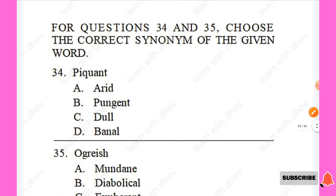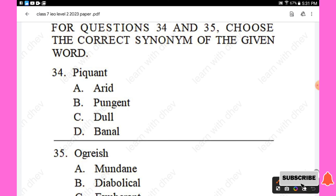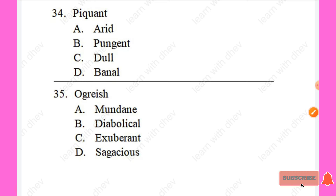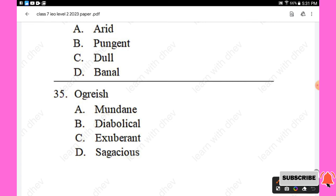For questions 34 and 35, choose the correct synonym of the given word. Question 34: The synonym of 'peccant' — options are arid, pungent, dull, bane. The right answer is 'pungent,' Option B. Question 35: The synonym of 'ogres' — options are mundane, diabolical, exuberant, sagacious. The right answer is 'diabolical,' Option B.